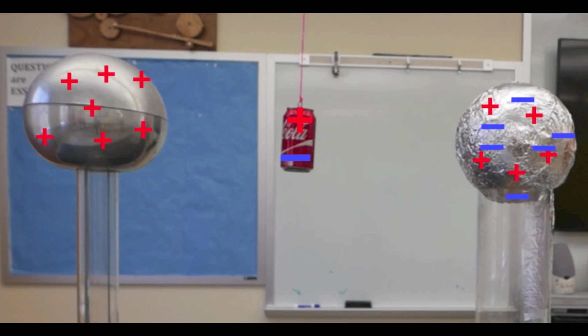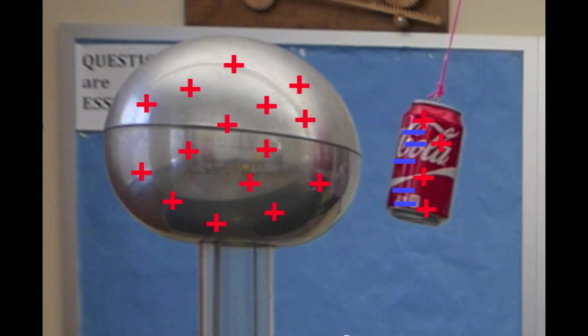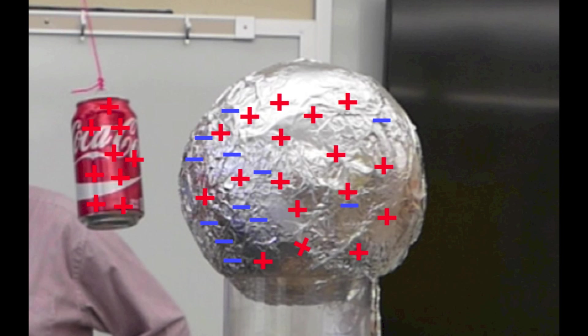Once again, our soda can starts off with a neutral charge, but it's attracted to the generator through the process of induction. Once it touches the generator, it gives up its electrons and becomes positively charged. Now that the can is the charged object, it's attracted to the electrons in the neutrally charged ball, once again through the process of induction.